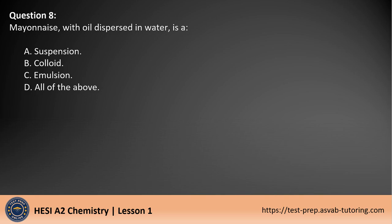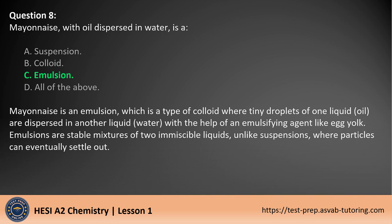Question 8. Mayonnaise, with oil dispersed in water, is A. A suspension. B. Colloid. C. Emulsion. D. All of the above. The answer is C. Mayonnaise is an emulsion, which is a type of colloid where tiny droplets of one liquid, oil, are dispersed in another liquid, water, with the help of an emulsifying agent like egg yolk. Emulsions are stable mixtures of two immiscible liquids, unlike suspensions, where particles can eventually settle out.